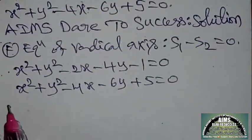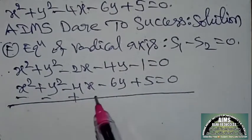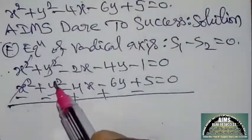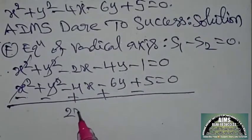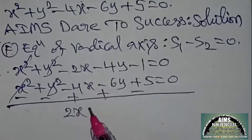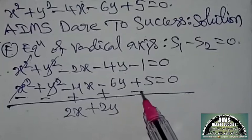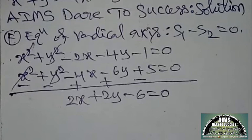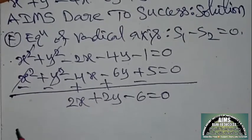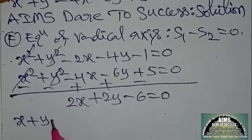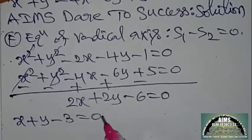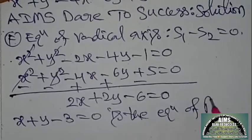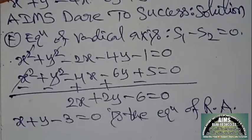Now take the subtraction. x² cancels, y² cancels. 4x − 2x = 2x; 6y − 4y = 2y; −1 − 5 = −6. So 2x + 2y − 6 = 0. Taking 2 as common factor, the equation simplifies to x + y − 3 = 0, which is the equation of the radical axis.